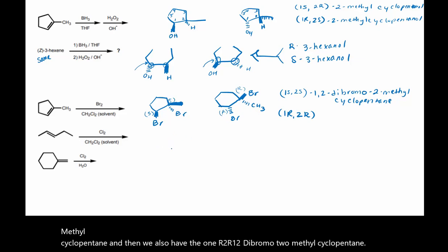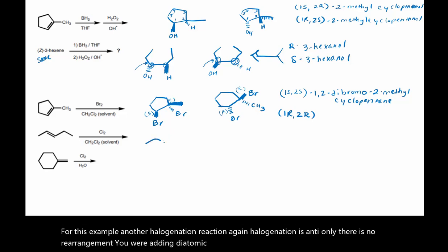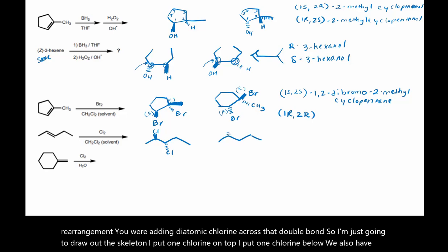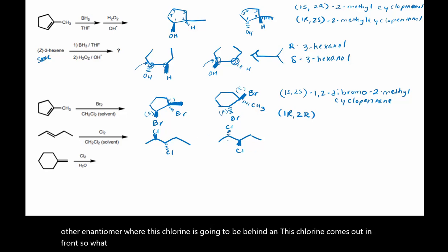For this example, another halogenation reaction. Again, halogenation is anti-only and there is no rearrangement. You are adding diatomic chlorine across that double bond. I'm just going to draw out the skeleton. I put one chlorine on top, I put one chlorine below. We also have the other enantiomer where this chlorine is going to be behind and this chlorine comes out in front.